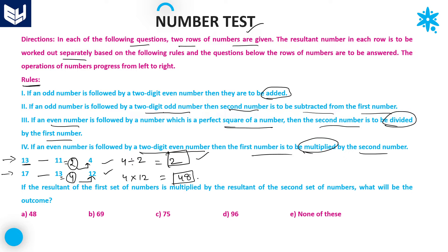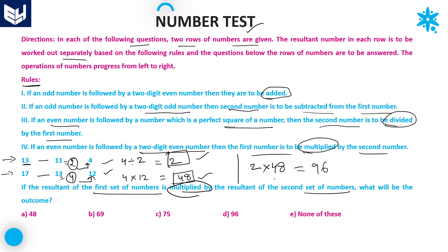Resultant of the first row is 2 and resultant of the second row is 48. The question asks: if the resultant of the first set of numbers is multiplied by the resultant of the second set of numbers, what will be the outcome? 2 into 48 equals 96. Option D is the right answer.